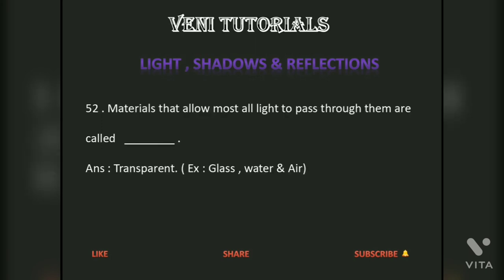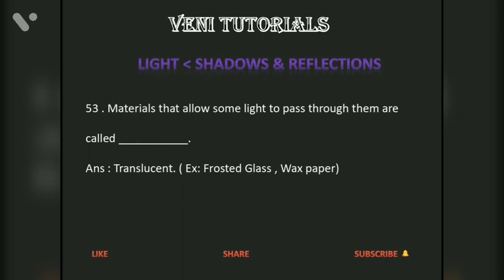Materials that allow most or all light to pass through them are called dash — answer: transparent. Examples: glass, water, and air. Materials that allow some light to pass through them are called dash — answer: translucent. Examples: frosted glass, wax paper.